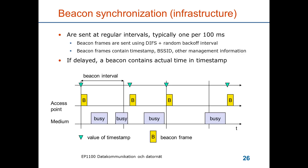When the second beacon is supposed to be sent and the channel is busy, it will be delayed due to medium access control, but its timestamp is the actual time it was sent. The third beacon is sent according to the interval measured from the clock tick when the beacon should have been sent if the channel had been idle, not from when the last beacon was actually sent.